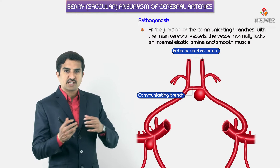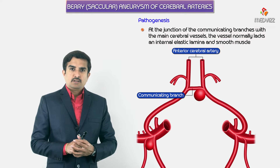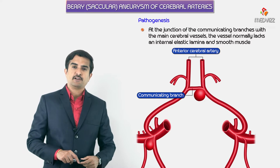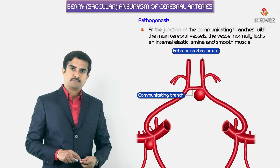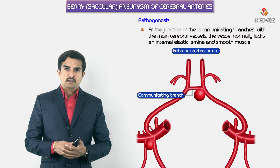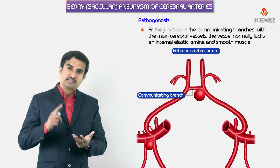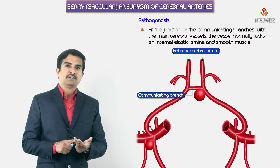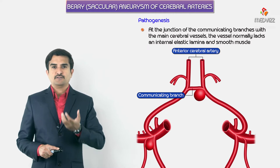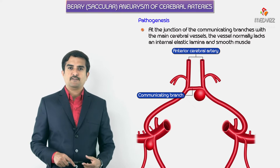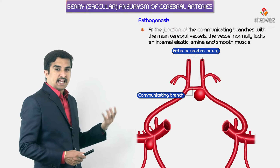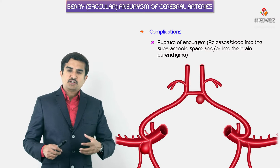Whenever there is increased hemodynamic stress or a hypertensive crisis, more blood is diverted to the circle of Willis. The cerebral arteries themselves are fine because they contain elastic lamina and smooth muscle, but the communicating branches lack both. This makes them the weakest part of the circle of Willis and predisposes them to the development of aneurysms.